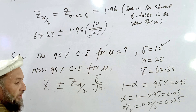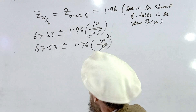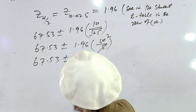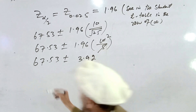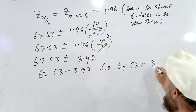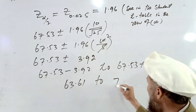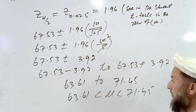We calculate: 67.53 plus or minus 1.96 times 10 divided by the square root of 25, which equals 5. Multiplying gives 67.53 plus or minus 3.92. Subtracting: 67.53 minus 3.92 gives the lower bound, and 67.53 plus 3.92 gives the upper bound, resulting in the confidence interval of approximately 63.61 to 71.45.